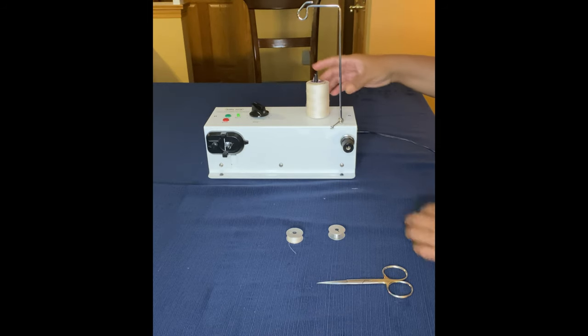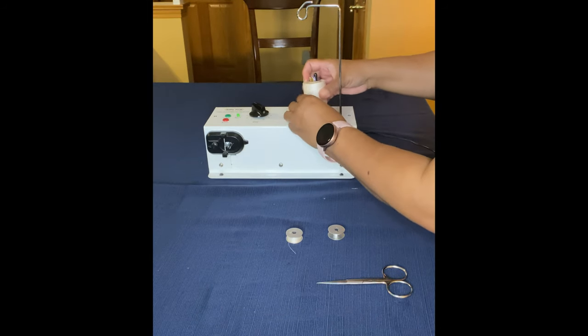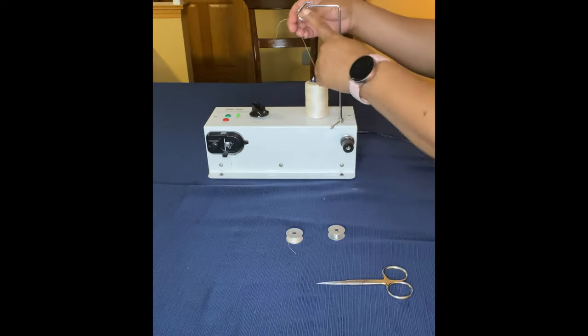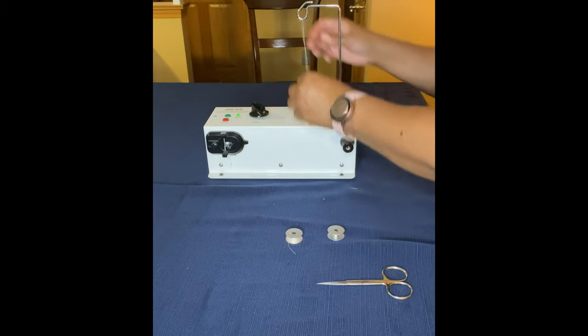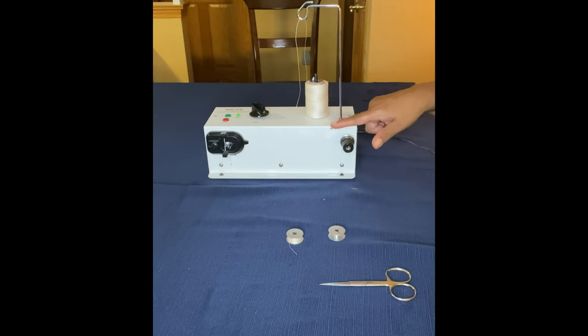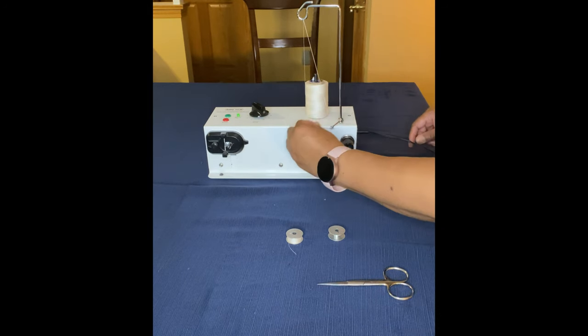Insert your thread onto the thread spool, then come up through the upper thread guide and down through the two pigtail thread guides. You'll wind those around it from right to left through the two pigtail thread guides.